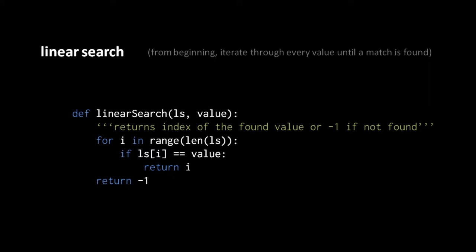In the case where the list contains no such value — when there is no match — we simply return negative 1 as a special value indicating not found. This is a common convention with search functions. Looking at the body of our function, our for loop iterates over a sequence which is the range from 0 up to, but not including, the length of the list. In the loop, we test whether the value at that index matches the value we're searching for, and if so, we return the index. If our loop is exhausted with no matches found, then we return negative 1.